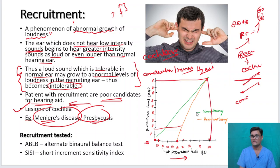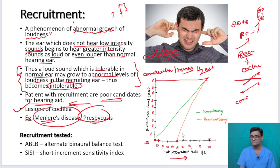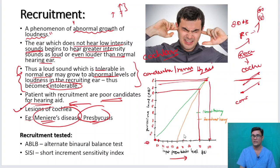This is the abnormal growth of loudness. In conductive hearing loss, the difference between the two lines is maintained throughout. But in a recruiting ear seen in cochlear lesions, you get this abnormal growth where once it crosses 90 decibels, he hears it at 80, and at 100 decibels input he hears it at 100. So the curve converges like this.